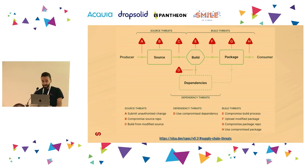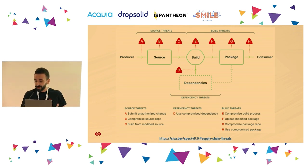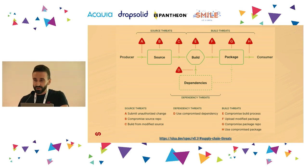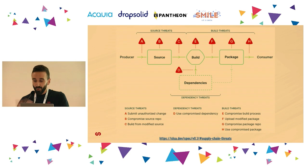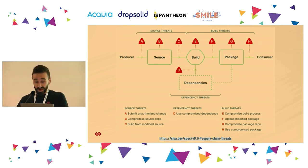As you can see, there are three main groups in which threats are categorized: source, build, and dependencies. Attackers today commonly exploit dependencies, which remain the weakest link in the security chain. It is estimated that a modern project has an average of more than 500 package dependencies today, and over 90 percent of the code in our products is not actually written by us.